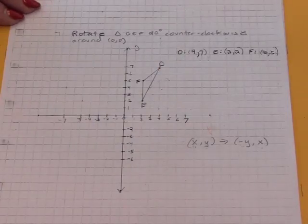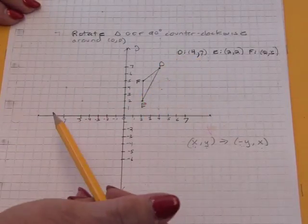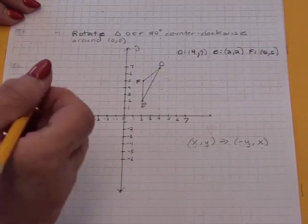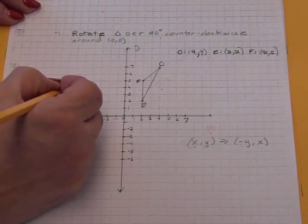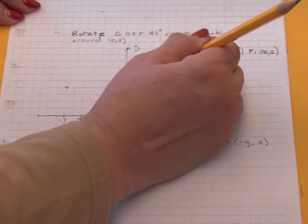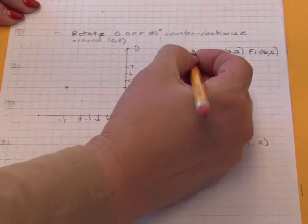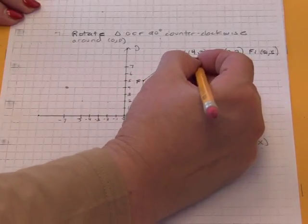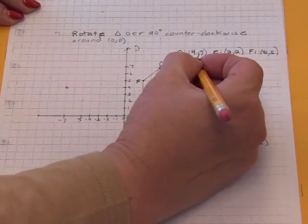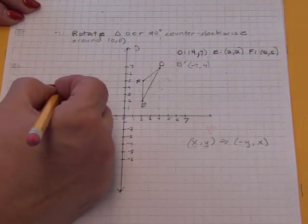In doing that, the point (4,7), D goes to D' which is going to be (-7,4). Whoops, D is not P. D', I switch them, 7,4, and then I multiply the x by negative 1. That becomes D'.